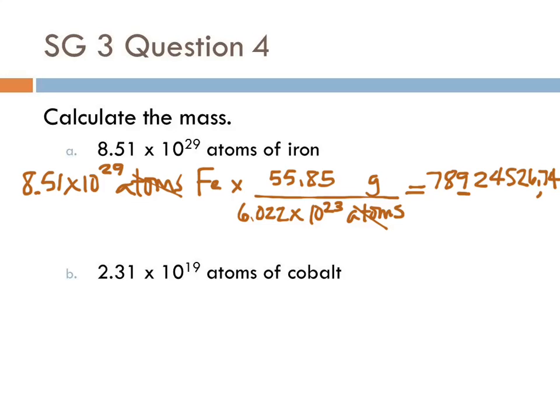So we need to move the decimal point over 1, 2, 3, 4, 5, 6, 7 places. So we're going to have 7.89 times 10 to the 7 grams.